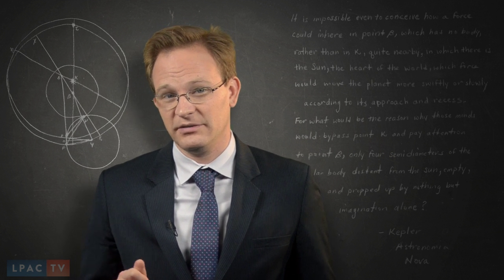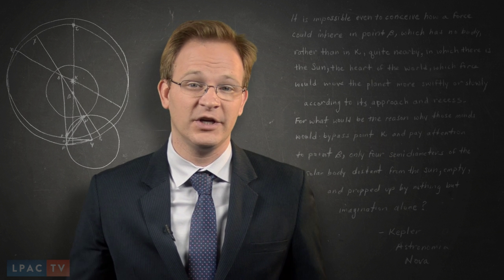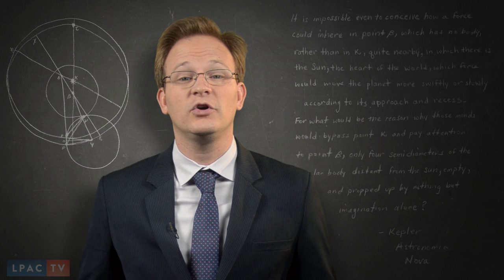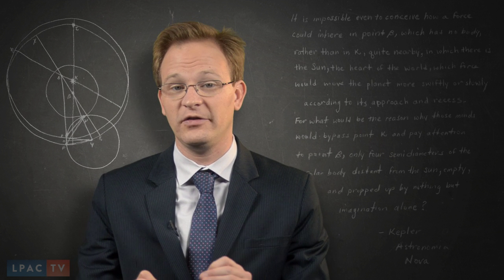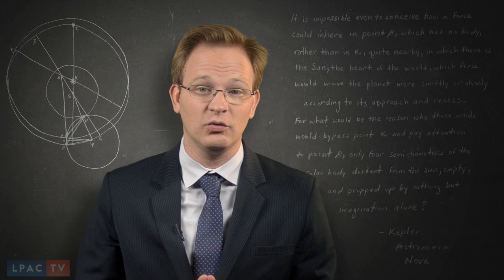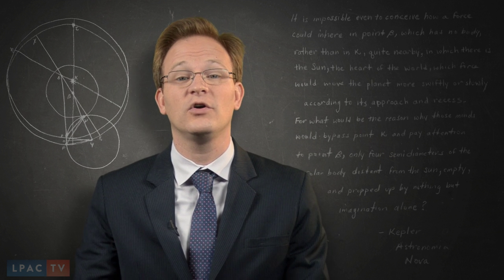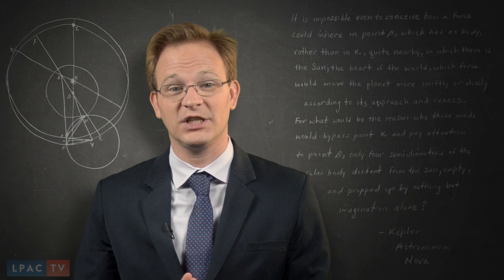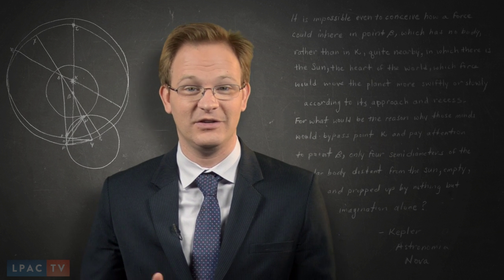Kepler had long been convinced that the way to resolve the conundrum and to show the truth of Copernicus's outlook was to determine the physical causes of the motion of the planets. And he had thought since his days in school that the Sun itself caused the motions, instead of sitting near the center watching them like a couch potato, as Copernicus's Sun does.